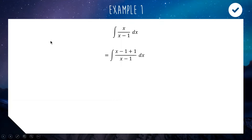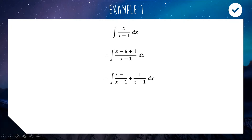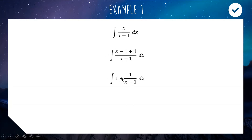We write x as (x−1)+1 — adding −1+1 means we've really added 0, so the numerator is still the same. Now we can split the numerator into two separate fractions: (x−1)/(x−1) plus 1/(x−1). That's way better because (x−1)/(x−1) is of course 1. Now we can integrate: 1 integrates to x, and 1/(x−1) integrates to ln|x−1|, plus your constant. Done.